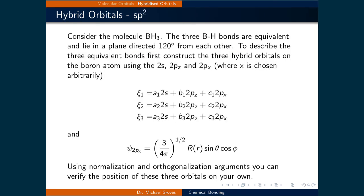Now let's look at the SP2 hybridized orbital. Consider the molecule BH3. The three boron-hydrogen bonds are equivalent and lie in a plane and we know that the SP2 hybridized orbitals are typically directed 120 degrees from each other. To demonstrate this angle, let's construct three hybrid orbitals on the boron atom using the 2S, the 2PZ, and the 2PX orbitals.